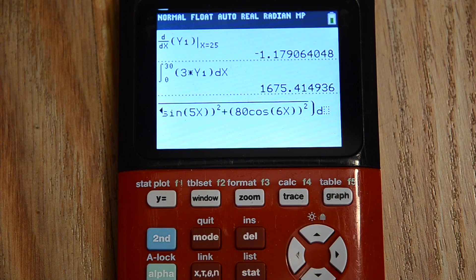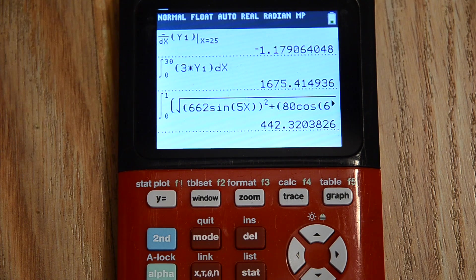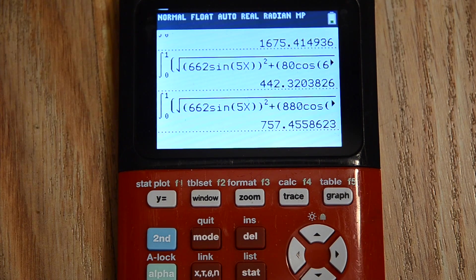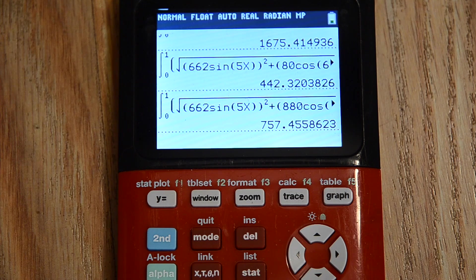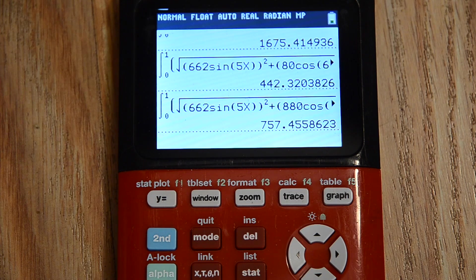And we are integrating, of course, with respect to x. And getting the wrong answer. Well, that would explain it. I missed it. I missed the 8. There we go. So, when that time period from t equals 0 to 1, that boat traveled 757.456 meters.